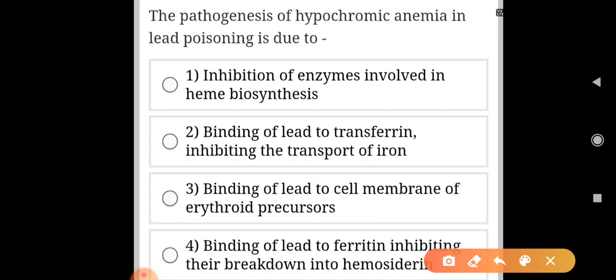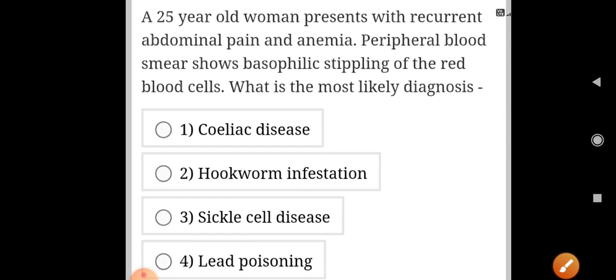A 25-year-old woman presents with recurrent abdominal pain and anemia. Peripheral blood smear shows basophilic stippling of the red blood cells. What is the most likely diagnosis? Basophilic stippling is seen in lead poisoning.